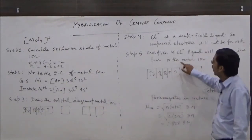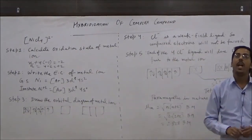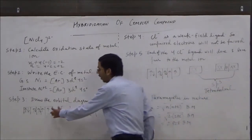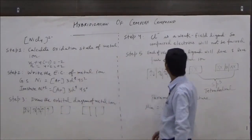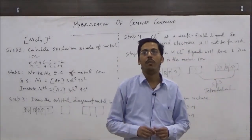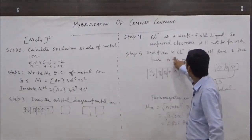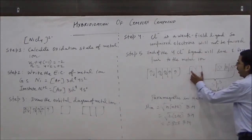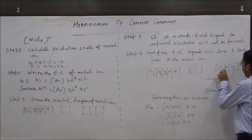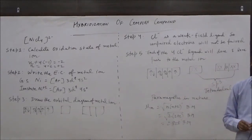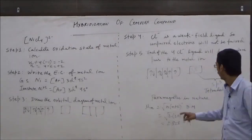We know that chloride ion is a weak field ligand, and a weak field ligand does not pair the unpaired electrons, which means the 2 unpaired electrons in 3d will not be paired. Each chloride ion donates 1 lone pair to the metal ion and there are 4 chloride ions, so a total of 4 orbitals will be used. The orbitals used are 4s, and three 4p orbitals. This means the hybridization of this complex ion is sp³, and the geometry of sp³ hybridization is tetrahedral.